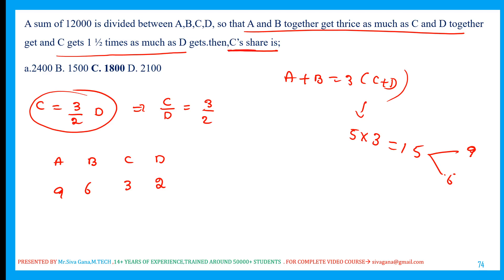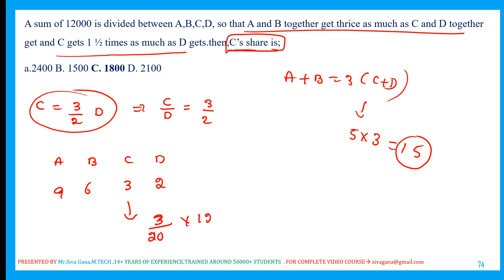A and B together have 15 parts, C and D have 5 parts, so total parts are 20. C's share is 3 parts out of 20. The amount is 12,000, so C's share is (3/20) × 12,000 = 1,800.